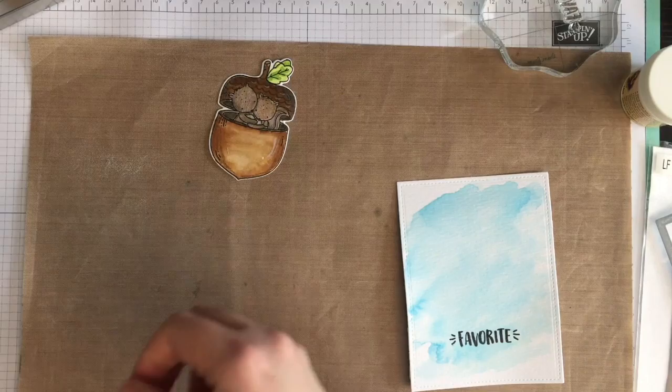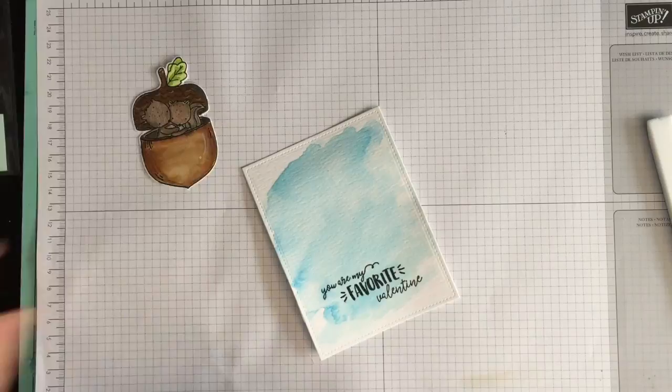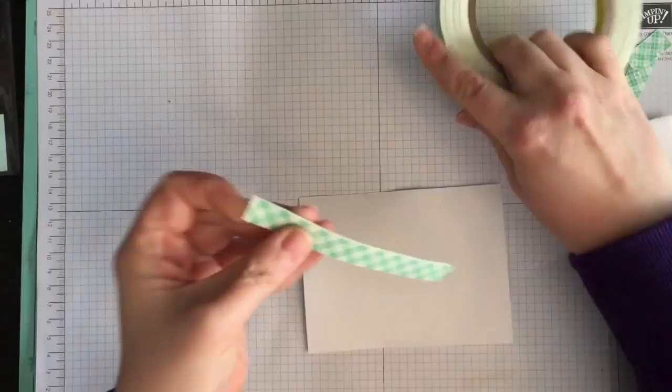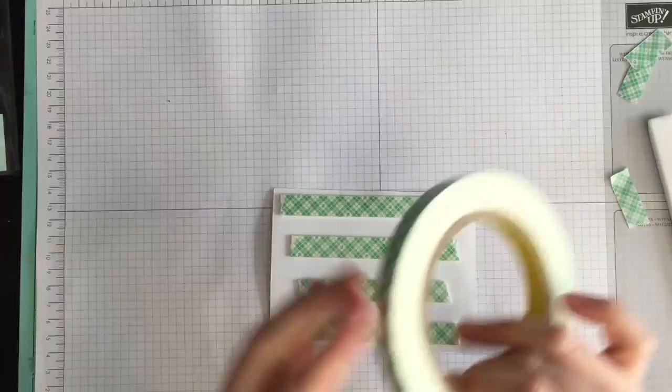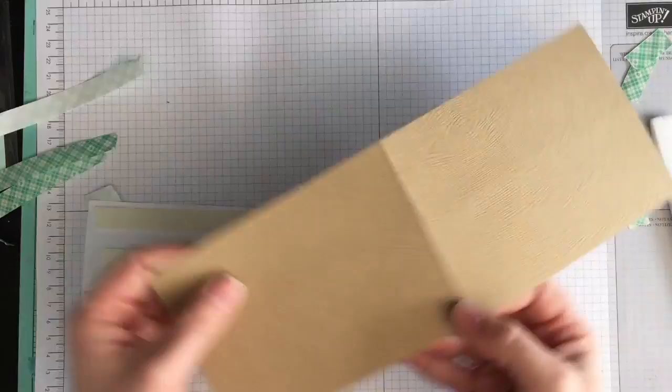Once the sentiment is done I'm going to add foam tape to the back of the squirrels to pop it up off the back panel. And then I'm going to add more foam tape to the back of the panel to adhere it to my card base which is going to be a wood grain cardstock cut at 11 inches by 4.25 inches scored at 5.5 inches.